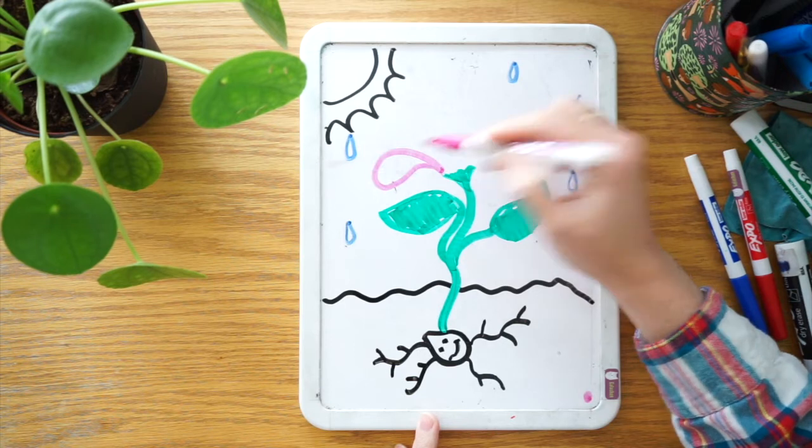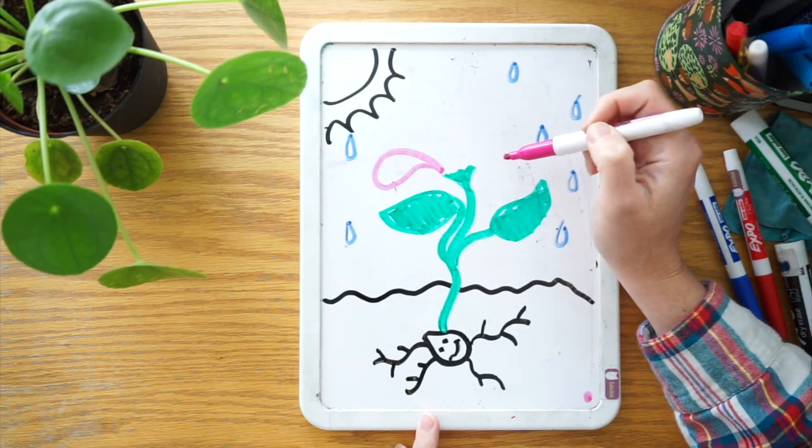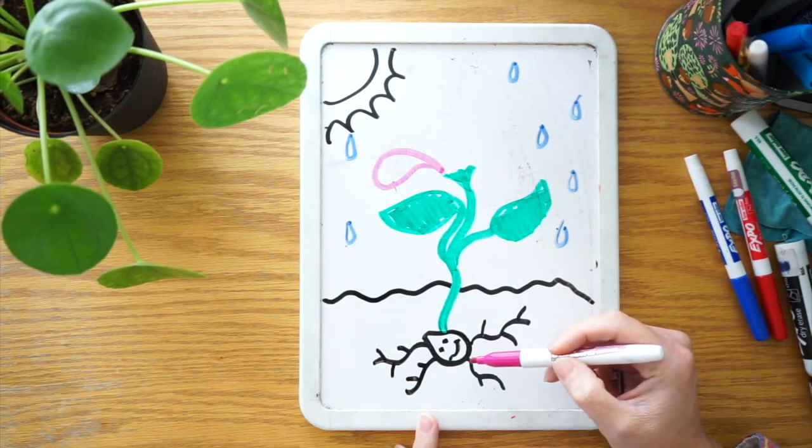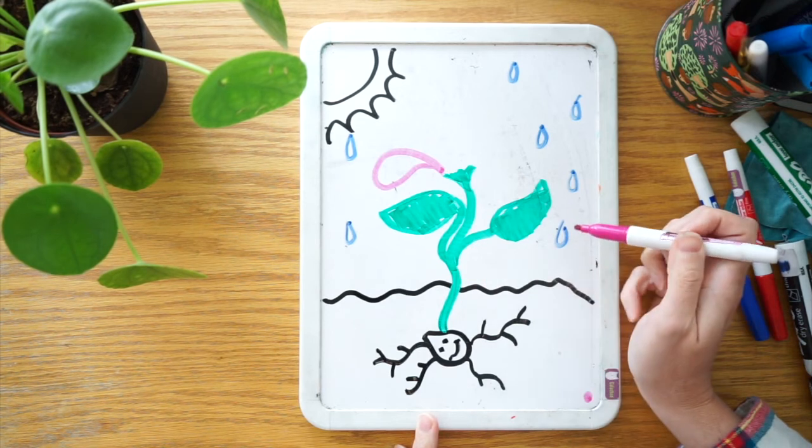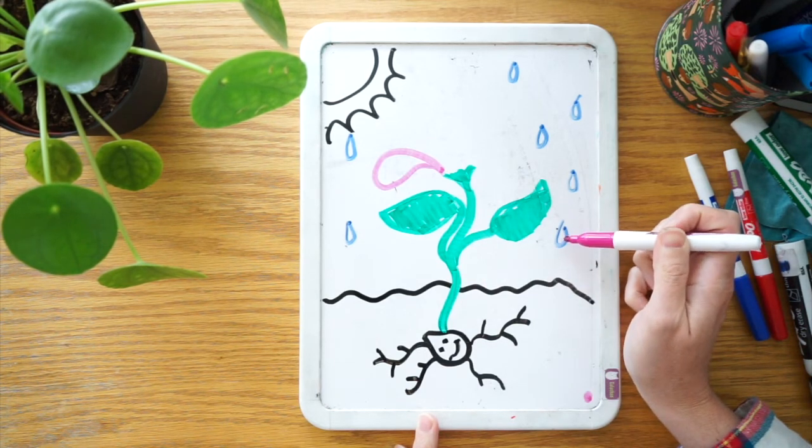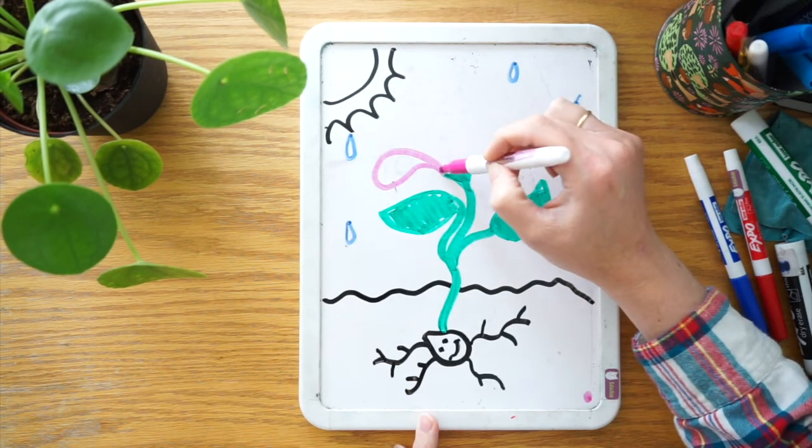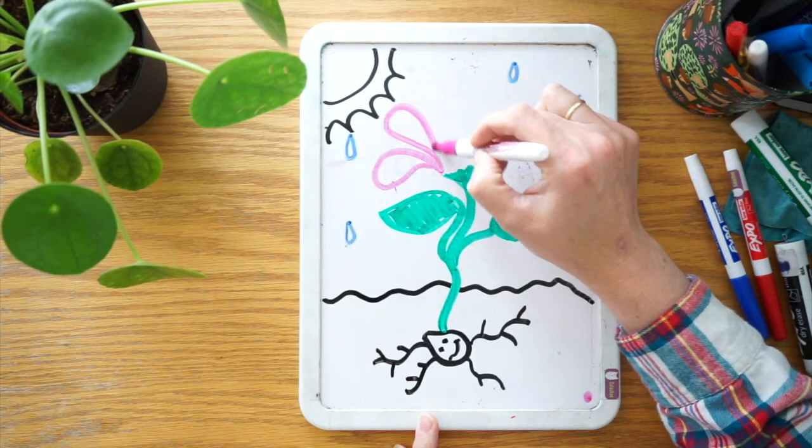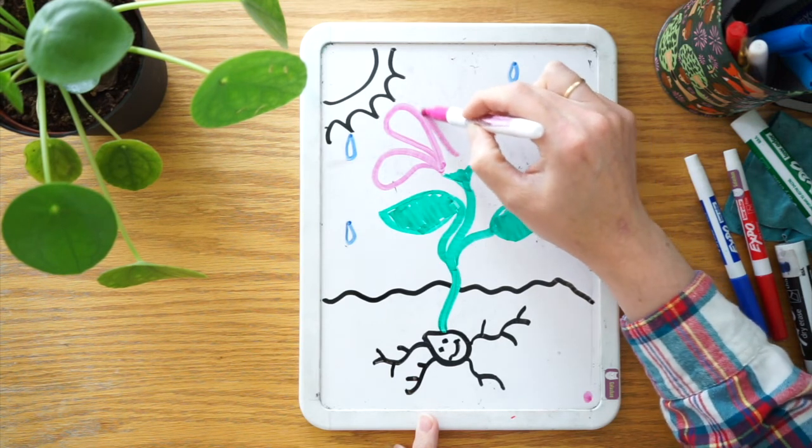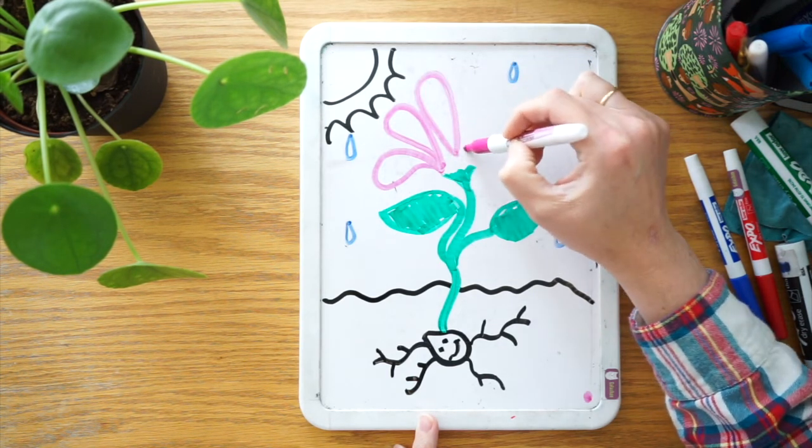And there's that raindrop shape again. It shows up a lot. It started with the seed, and then we saw them as actual raindrops, and then we see that shape again in the leaves. And now you can use the shape of a raindrop to make beautiful petals on your flower.